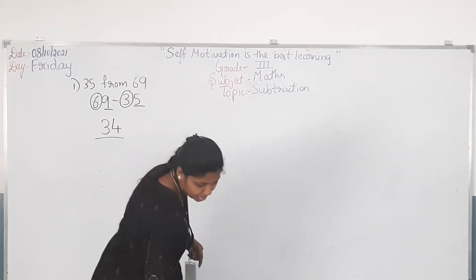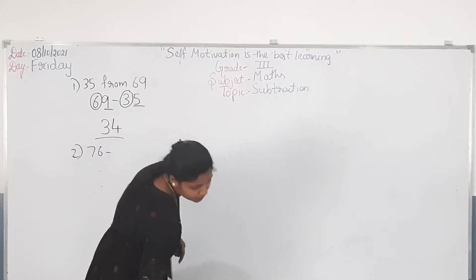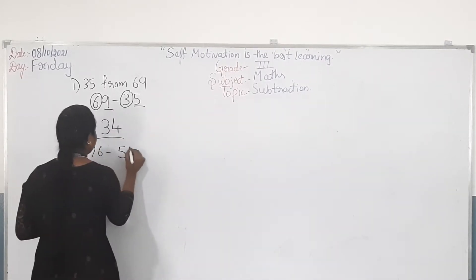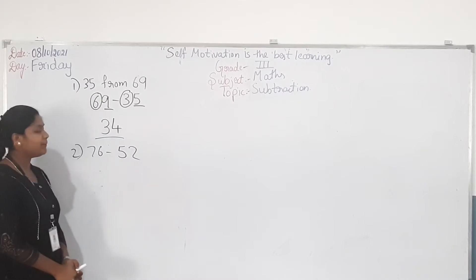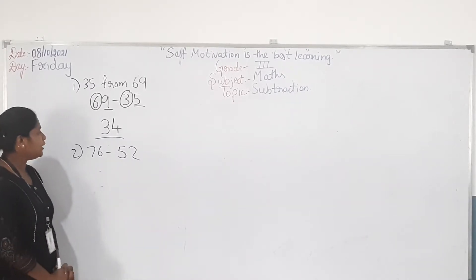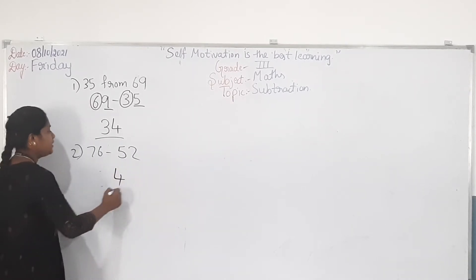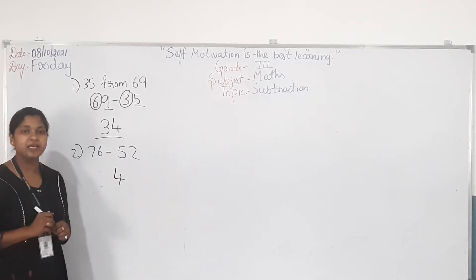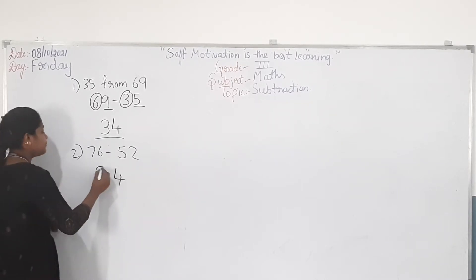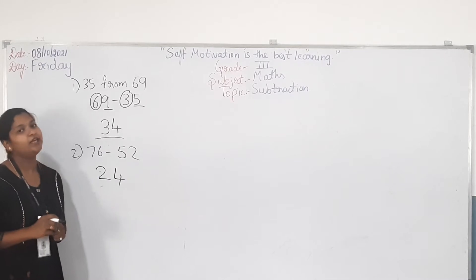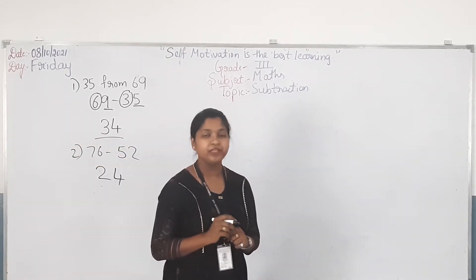Next question: 76 minus 52. I won't write anything on the board — you also calculate it. What is the number in the ones place? 6 and 2. What is 6 minus 2? 4. Then the numbers in the tens place: 7 and 5. 7 minus 5 is 2. So the answer is 24. This is how we subtract mentally without regrouping.